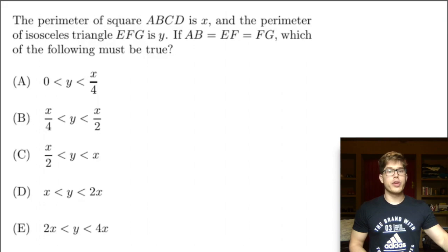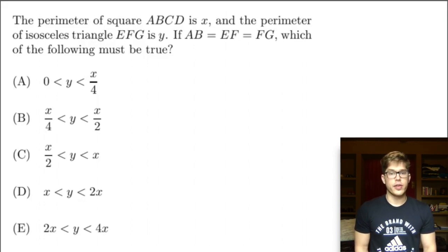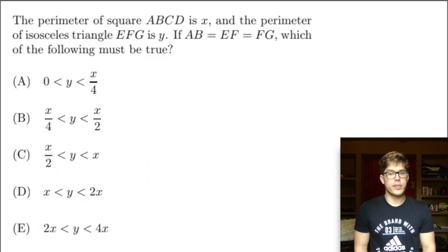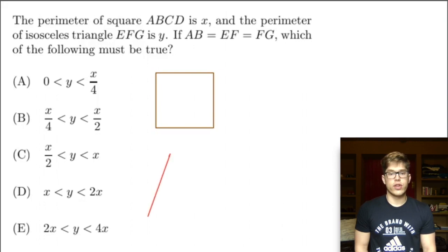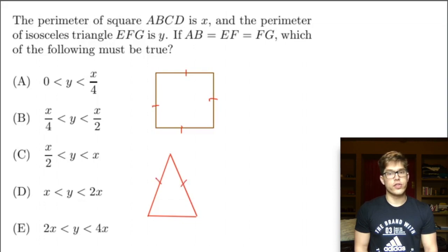The perimeter of square ABCD is X, and the perimeter of isosceles triangle EFG is Y. If AB equals EF equals FG, which of the following statements must be true? Let's draw some things. Here's our square and here's an isosceles triangle. We're told that the side lengths of our square, which are all equal, also equal the two identical sides of our isosceles triangle.